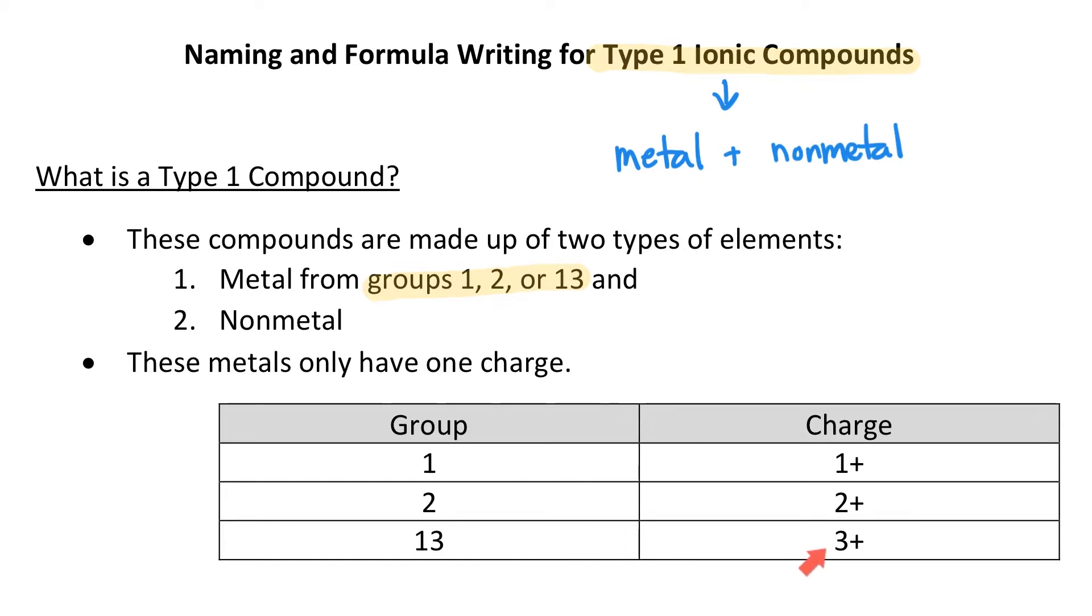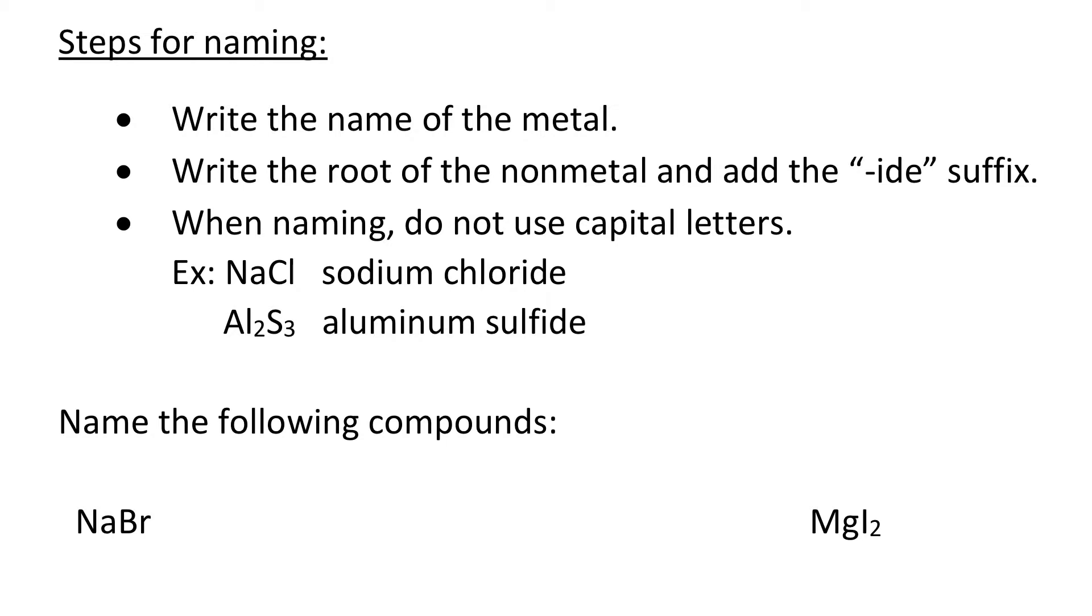When we look at the steps for naming ionic compounds of the Type 1 variety, we're looking first at writing the name of the metal down. After that, you will write the root of the nonmetal.